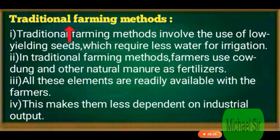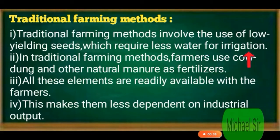Traditional Farming Methods — First: Traditional Farming Methods involve the use of low yielding seeds which require less water for irrigation. Traditional Farming Methods में low yielding seeds शामिल होती हैं, जिसे सिंचाई के लिए कम मात्रा में पानी की जरूरत पड़ती है।